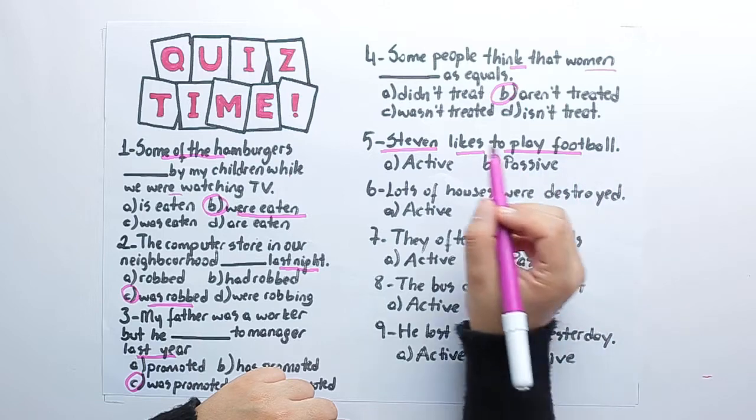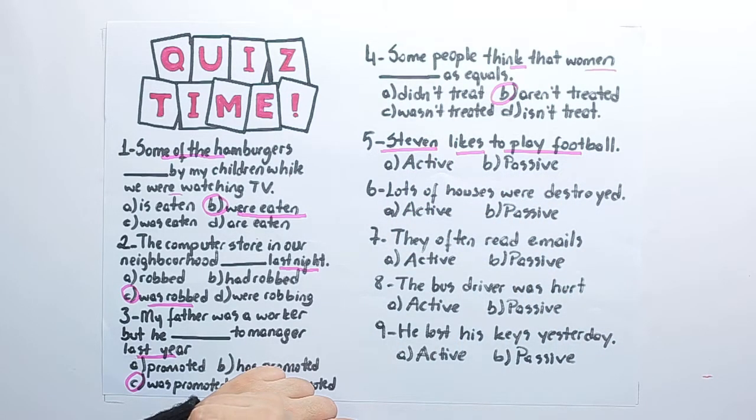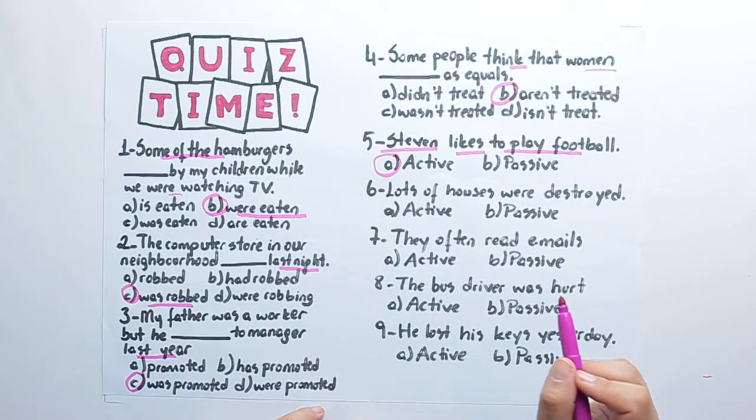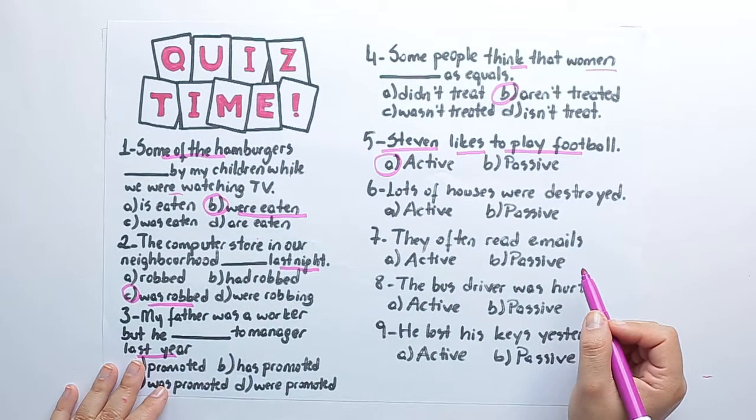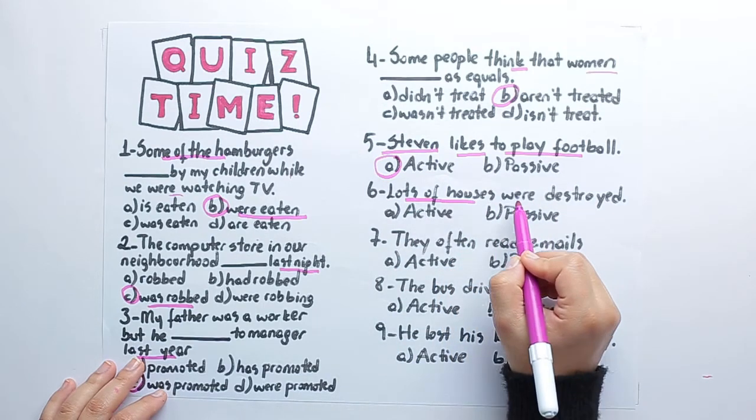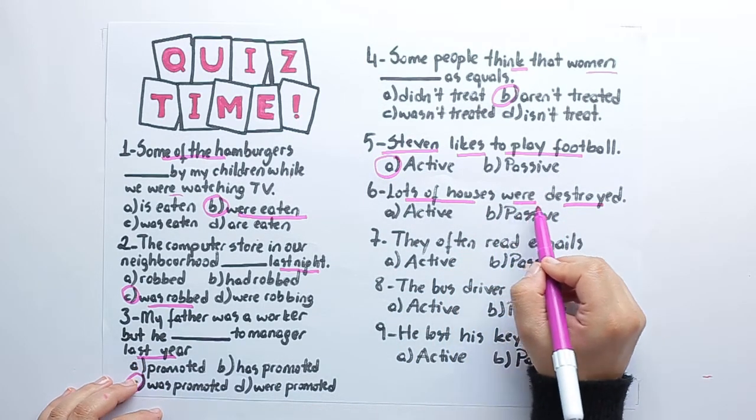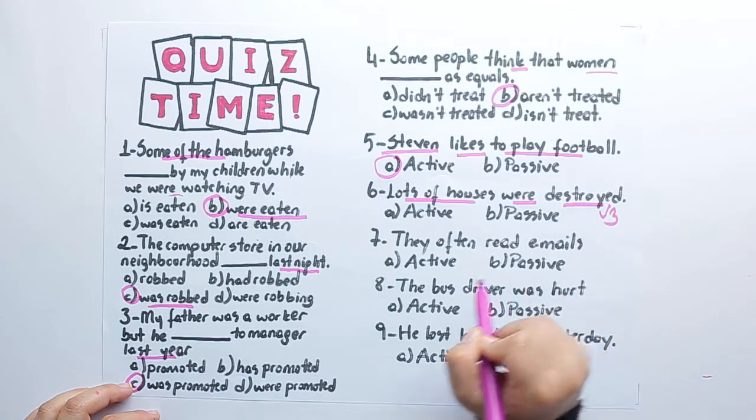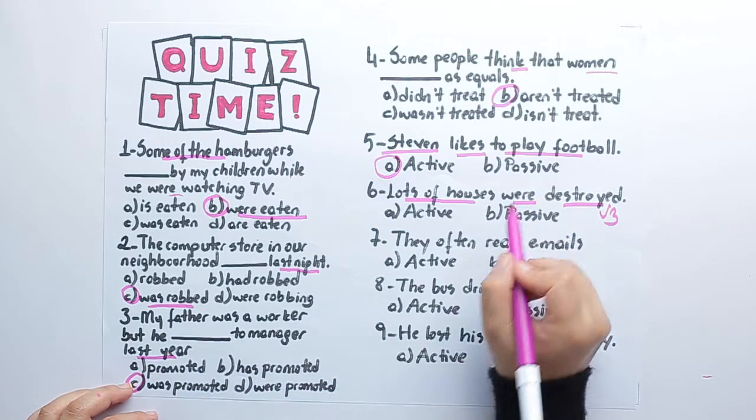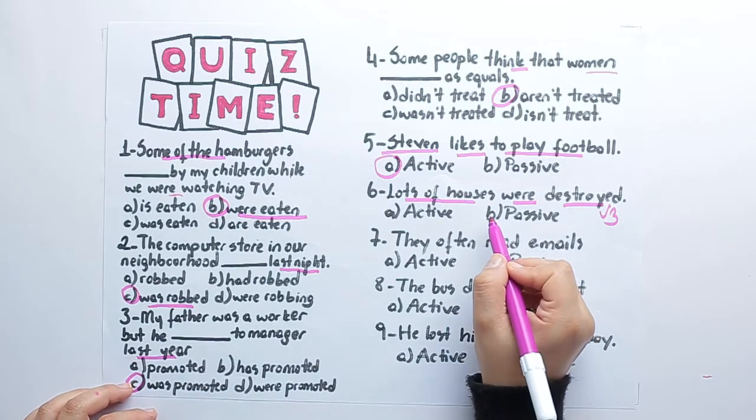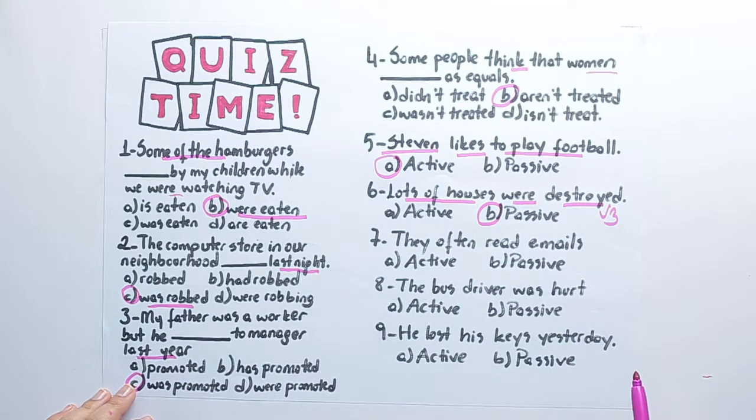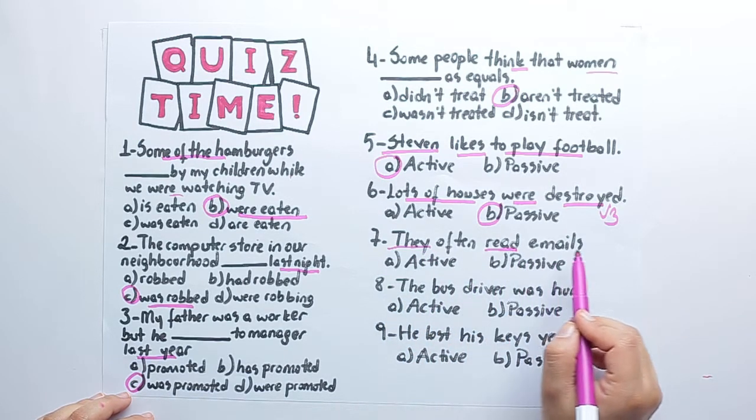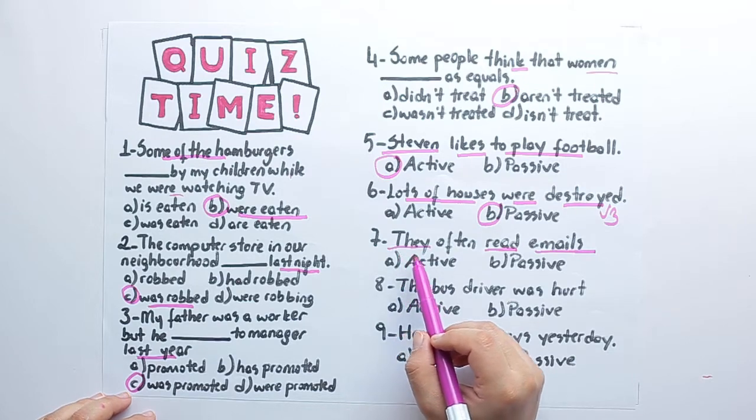It starts with the doer so it is an active formed sentence. Lots of houses were destroyed, were destroyed, verb three and the verb to be, so this is a passive formed sentence.